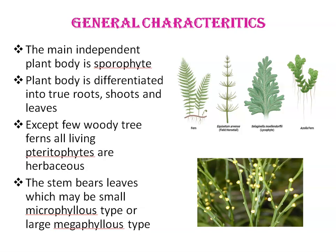Regarding the general characteristics of Pteridophytes: the main independent plant body of a Pteridophyte is the sporophyte, which develops from the diploid zygote. The plant body of a Pteridophyte is differentiated into true roots, shoots and leaves. Examples of Pteridophytes include fern, Equisetum, Selaginella, and Azolla. As you can see, the body is differentiated into true roots, shoots and leaves.